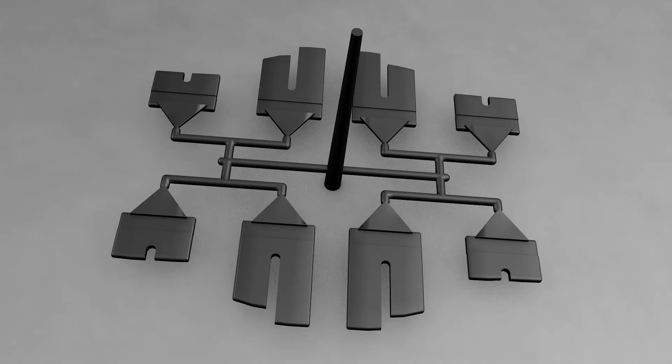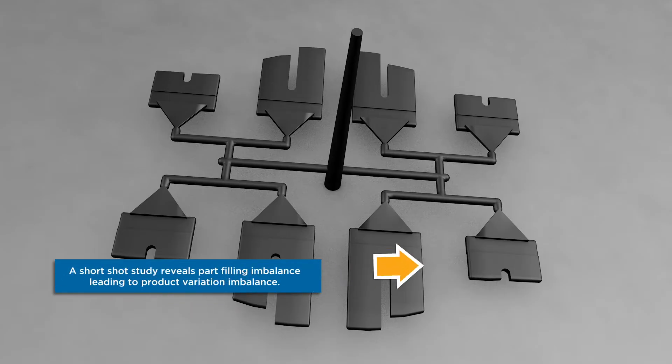Time and time again the parts coming out of our molds are not the same across all of the cavities. Take a look at this part for example. A short shot study reveals an obvious part imbalance. You can see that the outer cavities are filling much more slowly than the inner cavities.